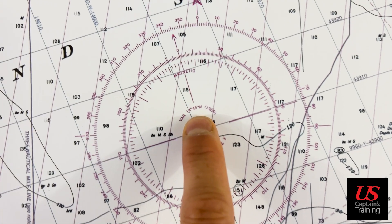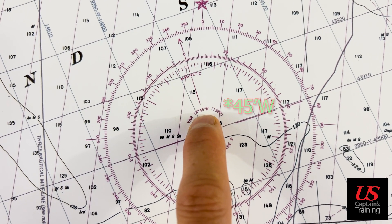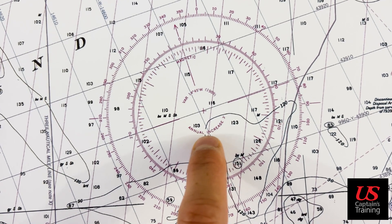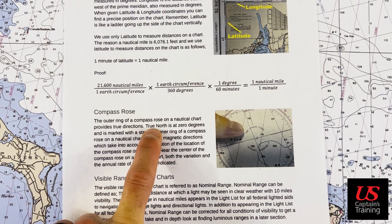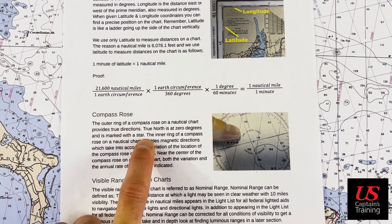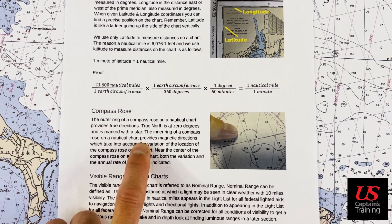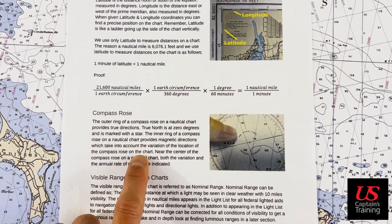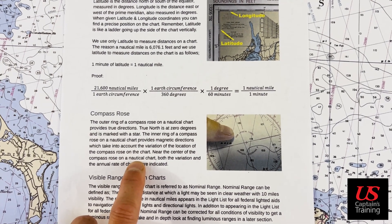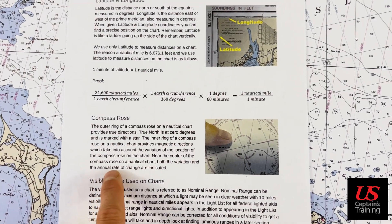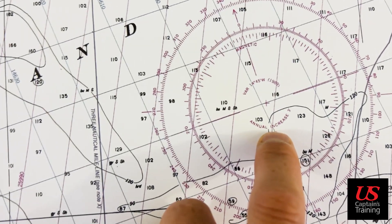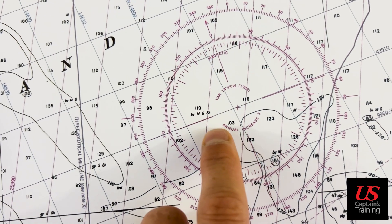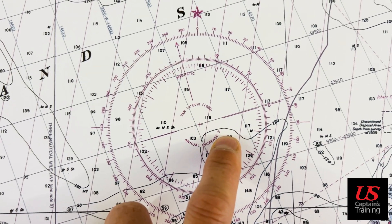Looking closer: variation is 14 degrees 15 minutes west in 1989, with an annual increase of three minutes. The outer ring of the compass rose provides true directions — true north is at zero degrees marked with a star. The inner ring provides magnetic directions, which takes into account the variation at the location of the compass rose. Near the center, both the variation and annual rate of change are indicated, so you could calculate the current variation from the 1989 base value.